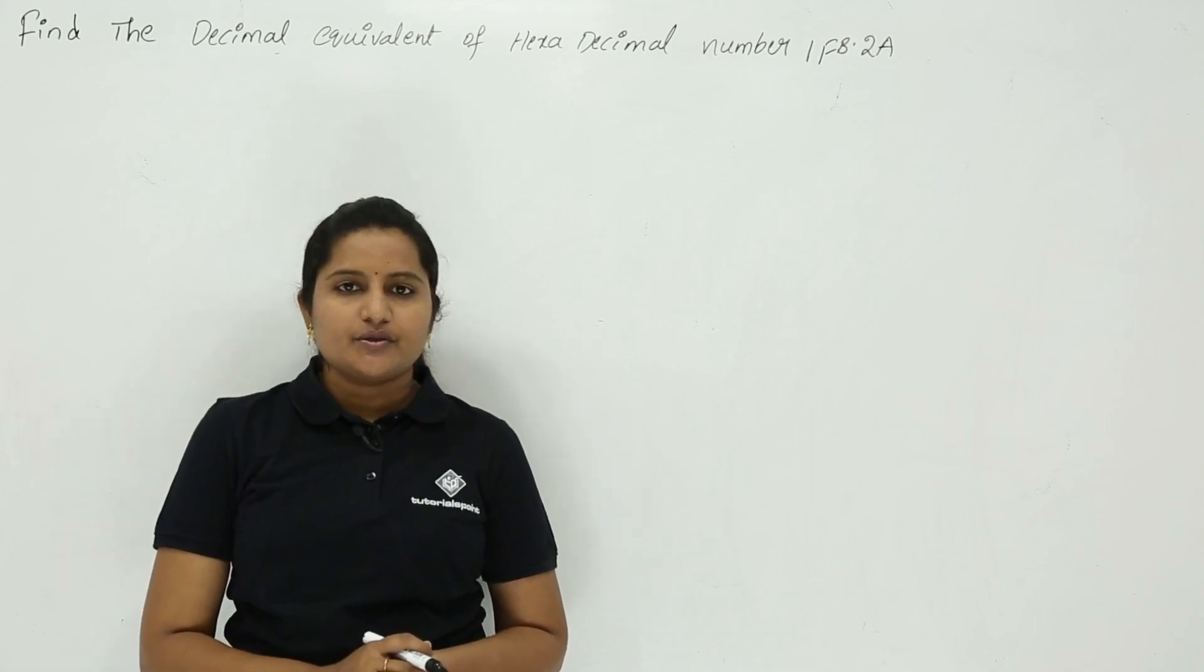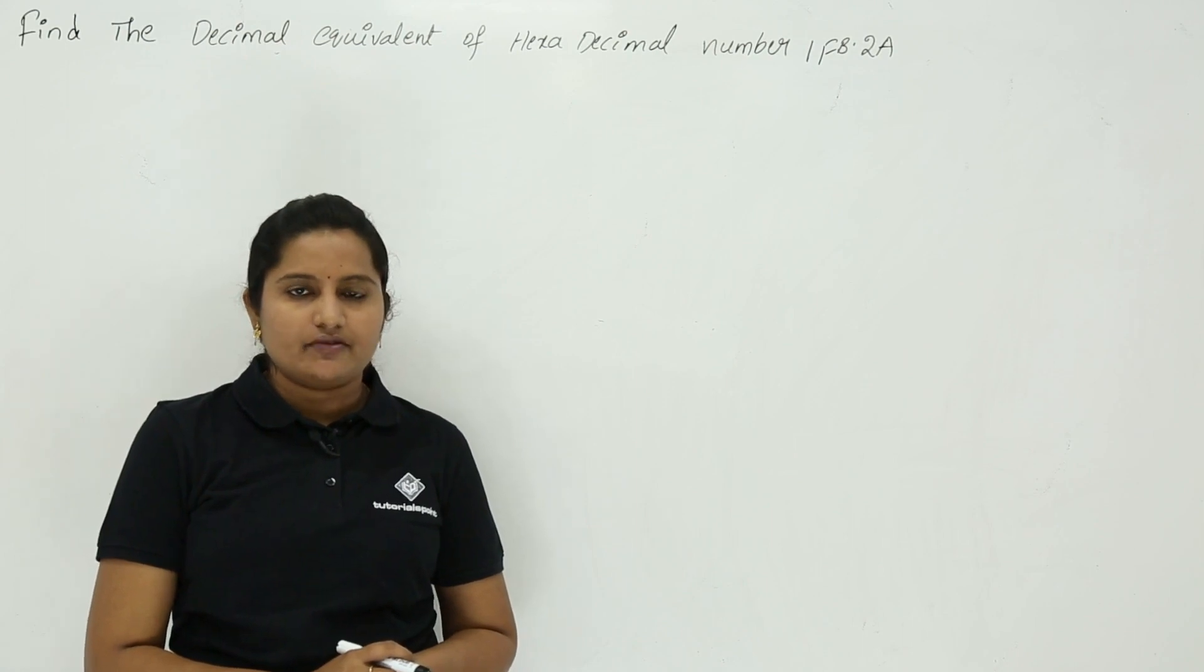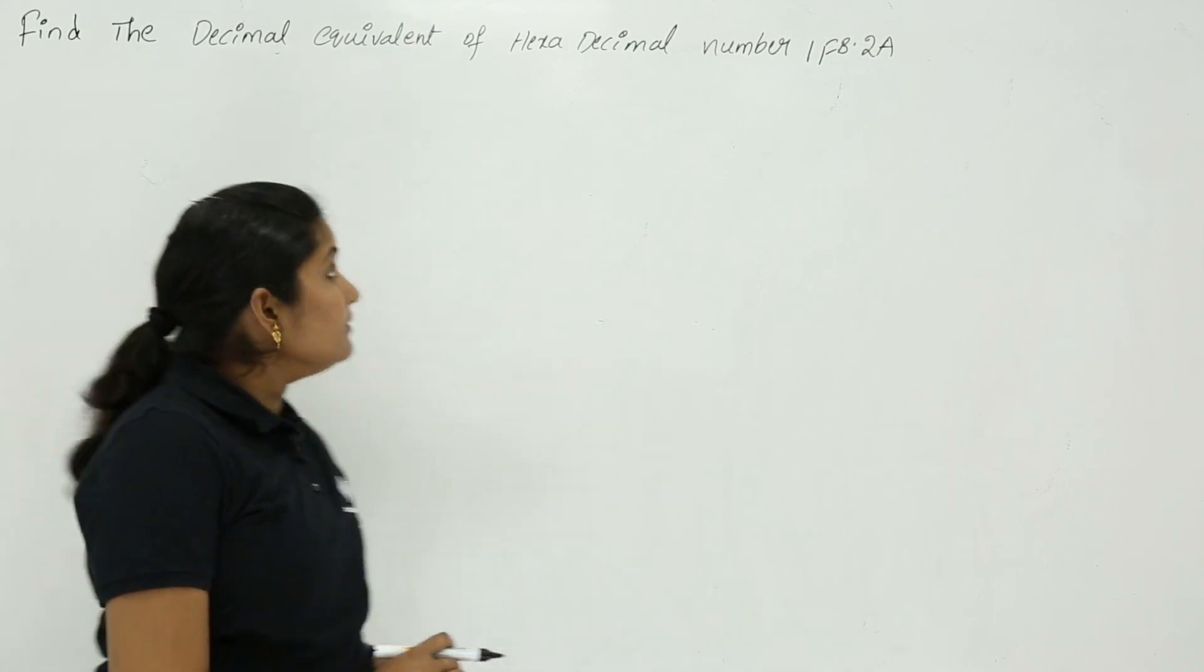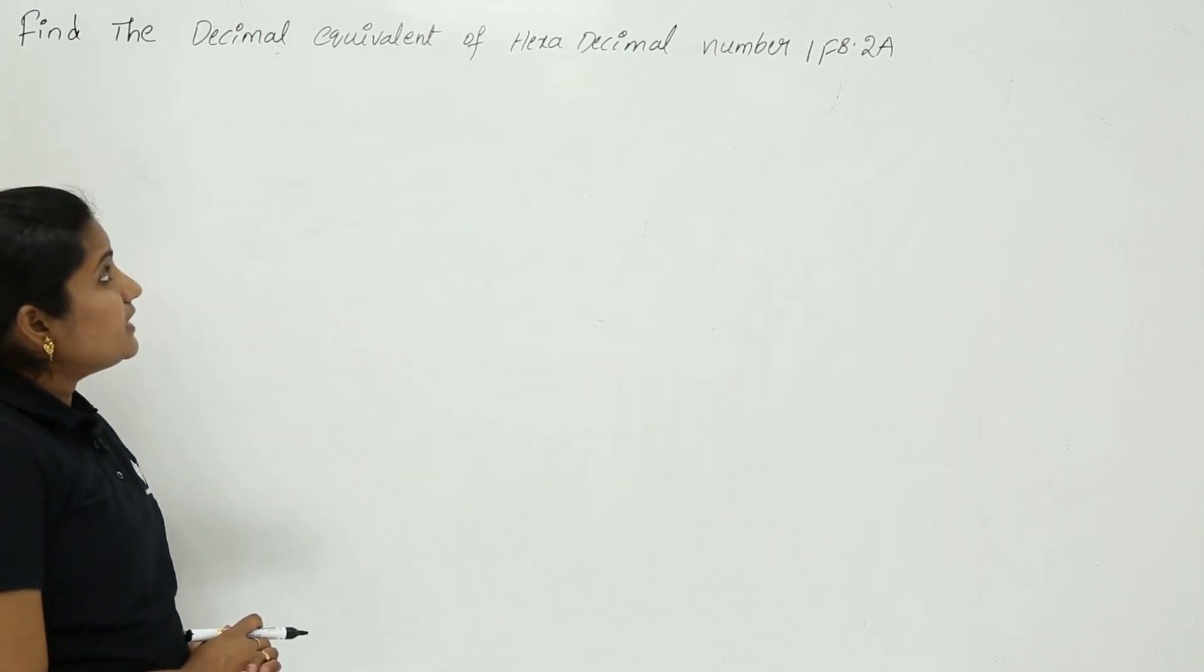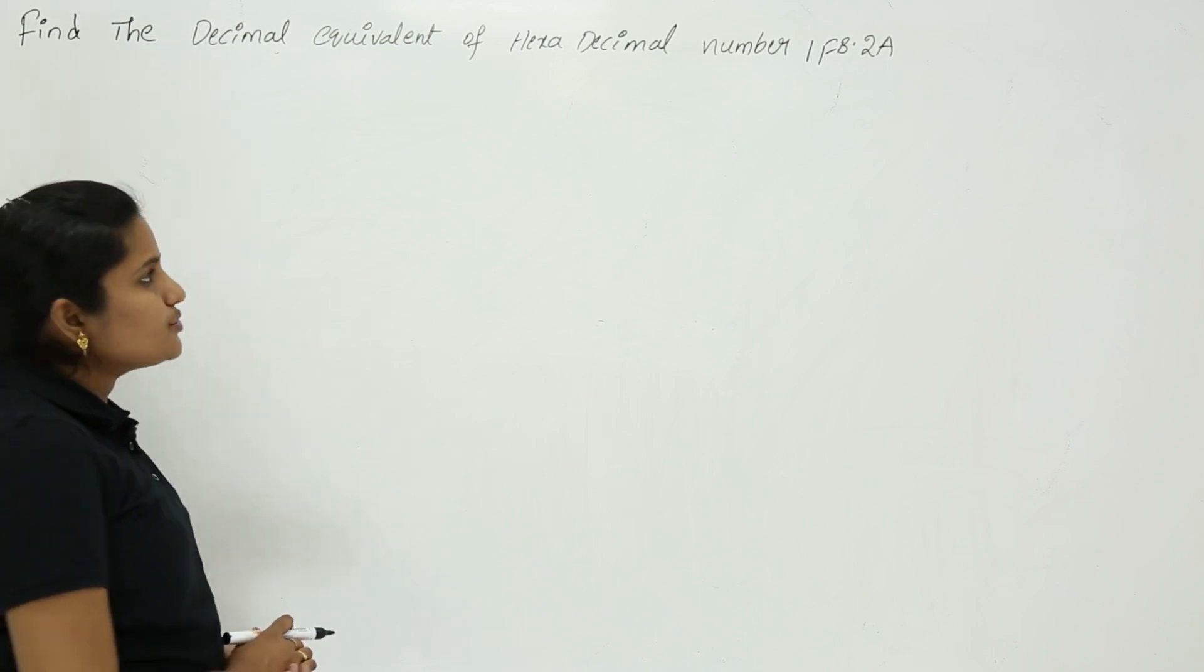In this class we are going to discuss a conversion that is related to hexadecimal to decimal conversion. See the problem here. Find the decimal equivalent of hexadecimal number 1FB.2A.